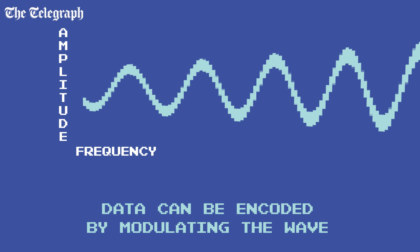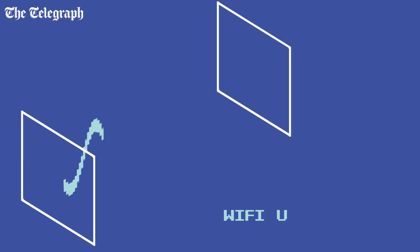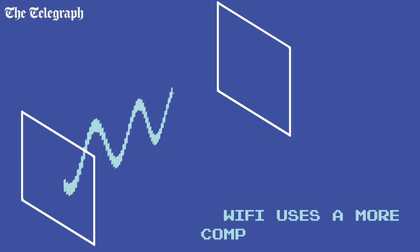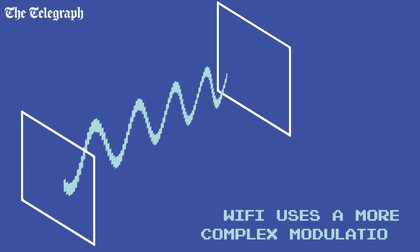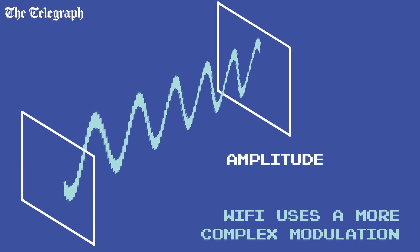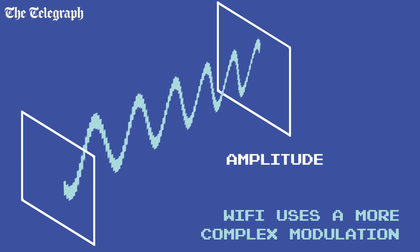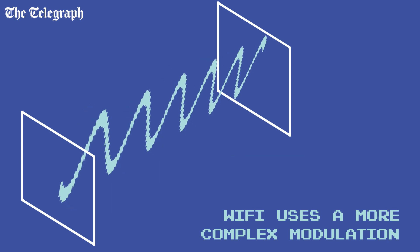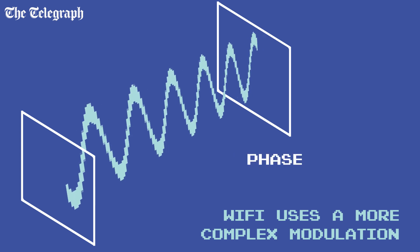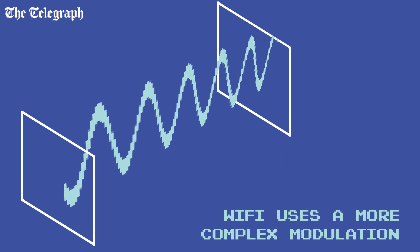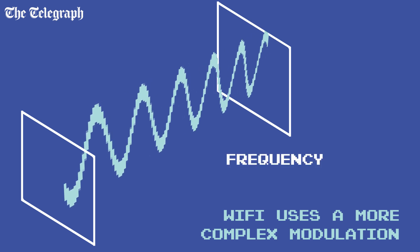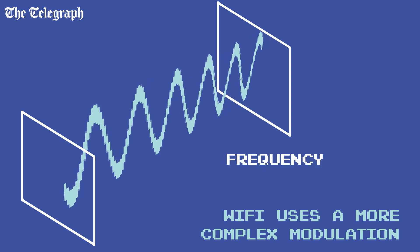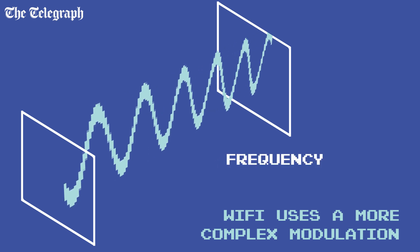Wi-Fi uses a digital signal with a much more complex pattern of modulation, including AM, phase modulation and other encodings, to transmit data in the form of ones and zeros — binary code.